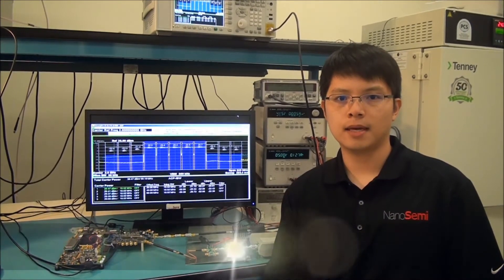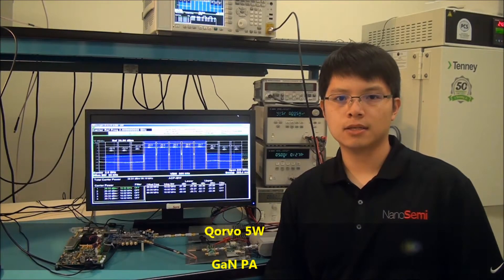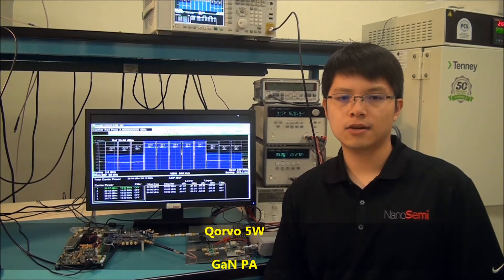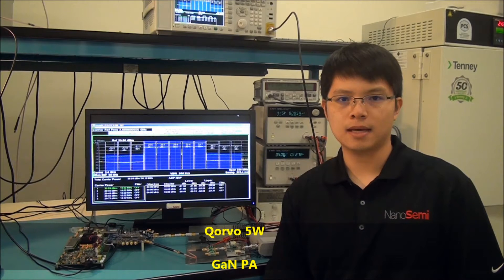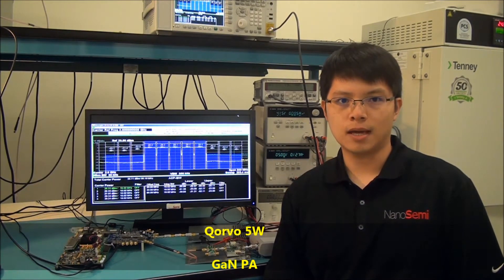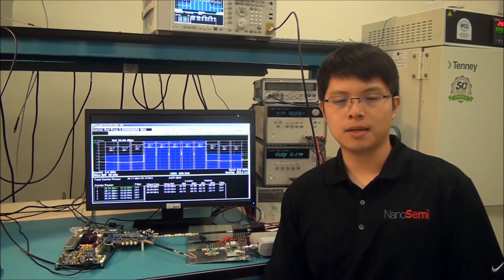Next, Qorvo's QPA2705 5W two-stage gallium nitride power amplifier is showcased. It has 30 dB small signal gain and it achieves a PAE of 35% operating at 37 dBm average output power in a compact 6x10 mm surface mount package.